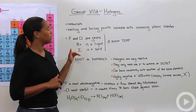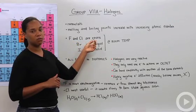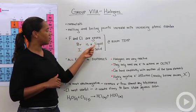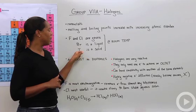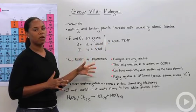Let's talk about a few of the elements that are contained in this family. Fluorine and chlorine are gases at room temperature, bromine is a liquid at room temperature, and iodine is a solid at room temperature. Probably the most important part of halogens that you're going to encounter is that they all exist as what we call diatomic atoms.